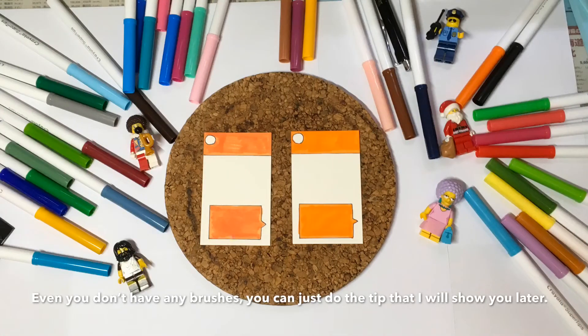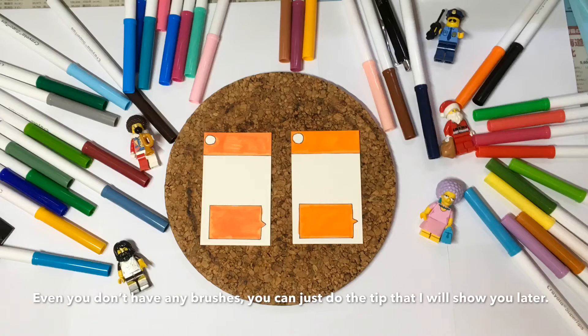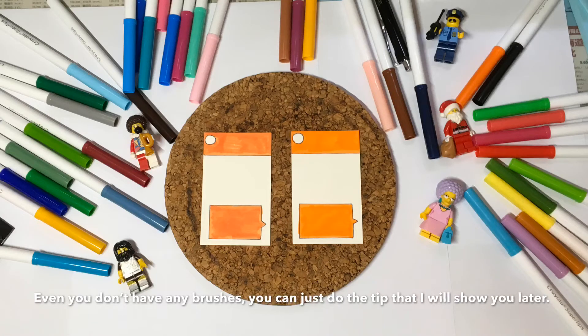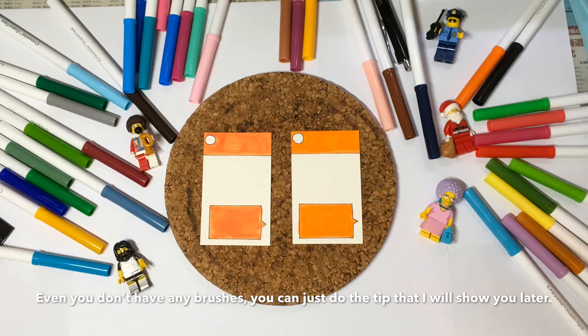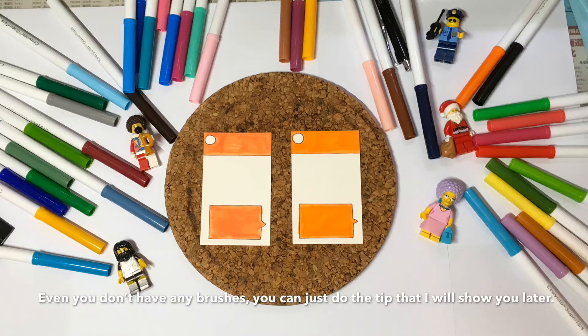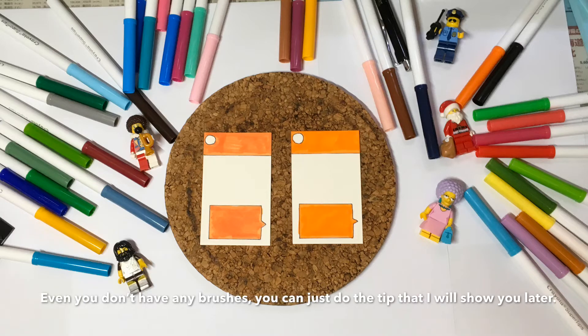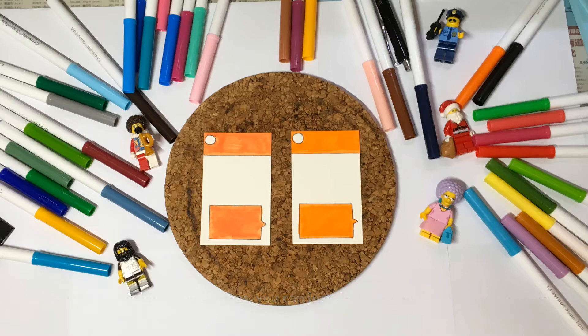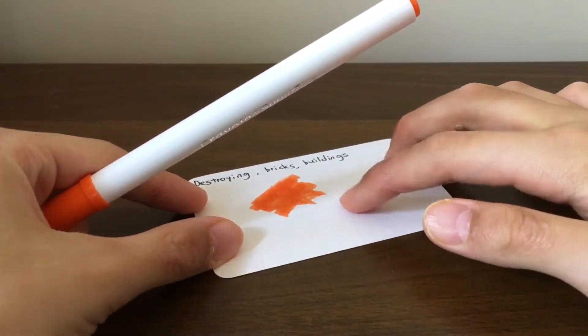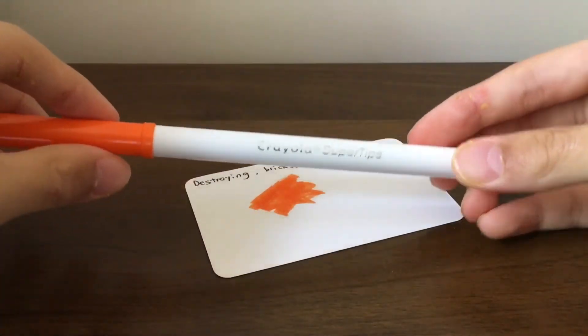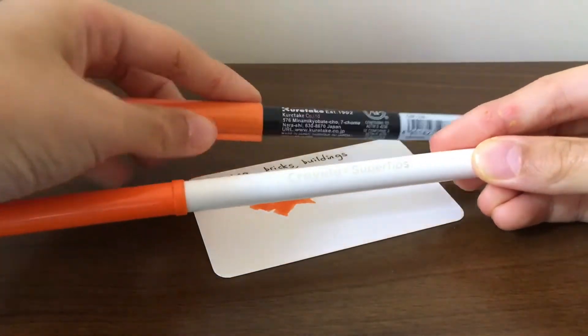So the fourth tip: color more evenly. On the left card, it's from Crayola. I mean, I colored it with Crayola and it's not even, it's muddy. But on the right card, it's even because I colored with brush. If you don't have any brush, you can just use this tip. This is Crayola and this is my brush.